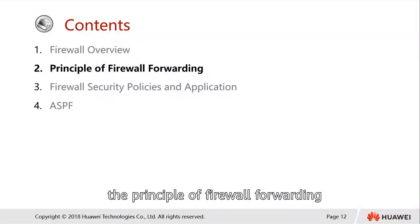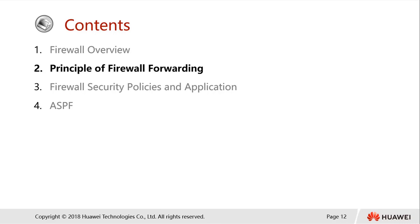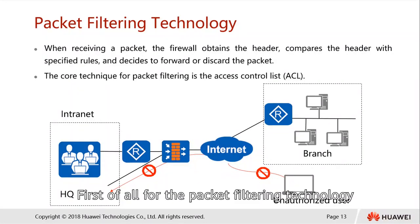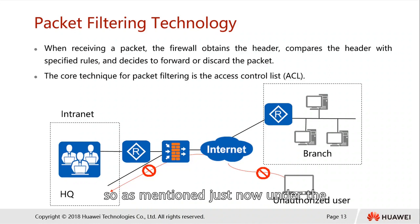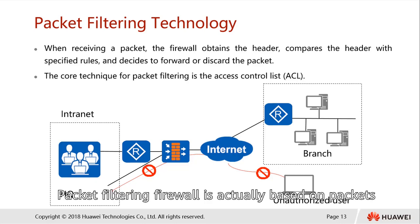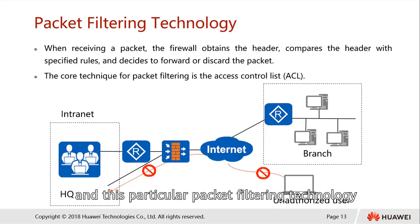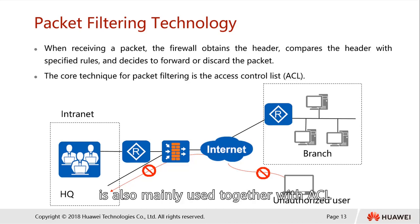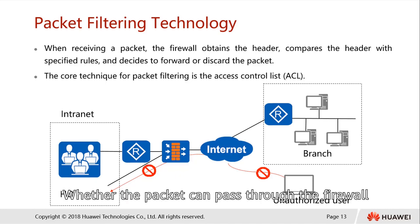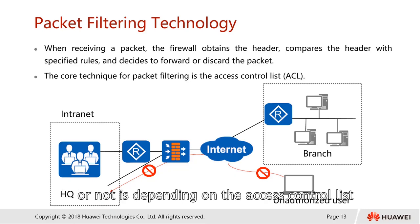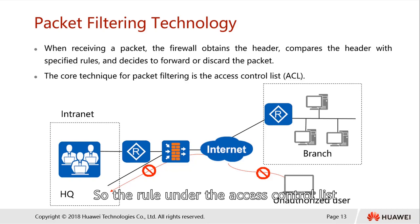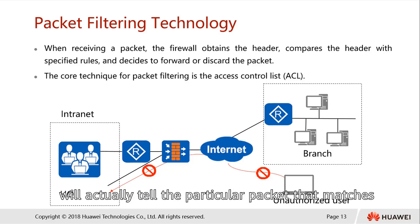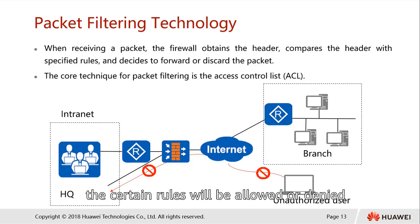Next we are going to see the principle of firewall workings. First, for packet filtering technology, the packet filtering firewall is based on packets. This technology is mainly used together with ACL. Whether a packet can pass through the firewall or not depends on the ACL. The rules under the ACL will tell whether a packet that matches certain rules will be allowed or denied.